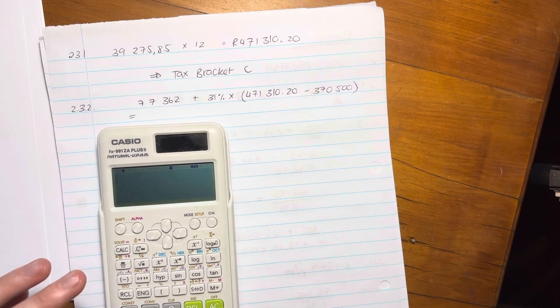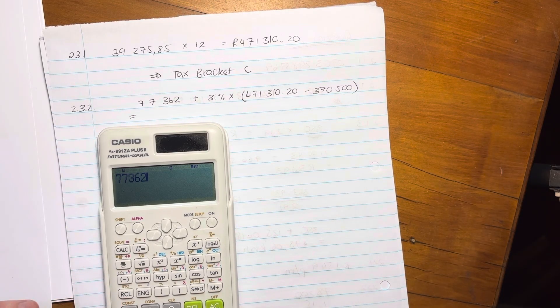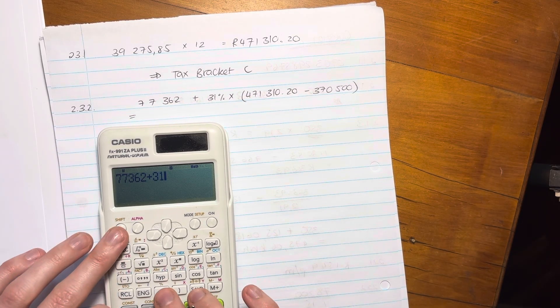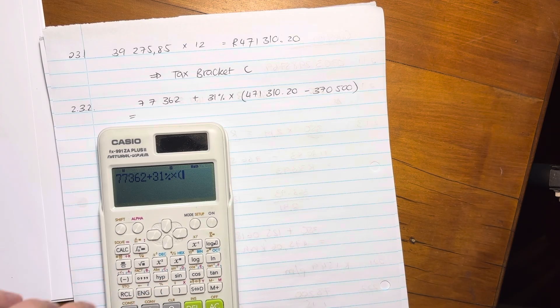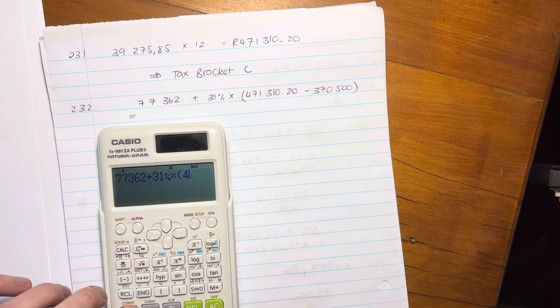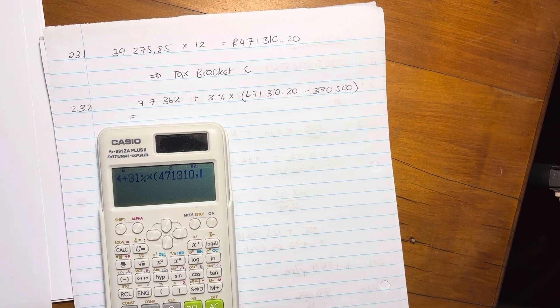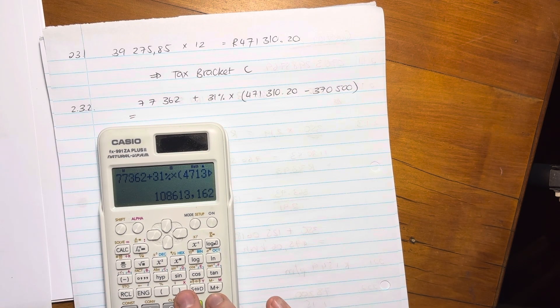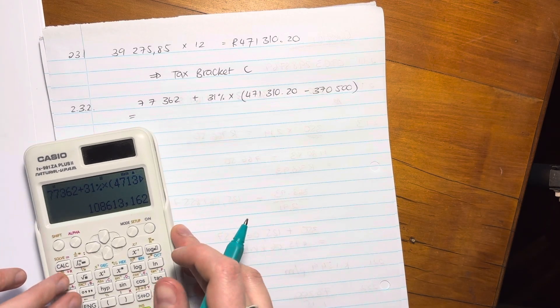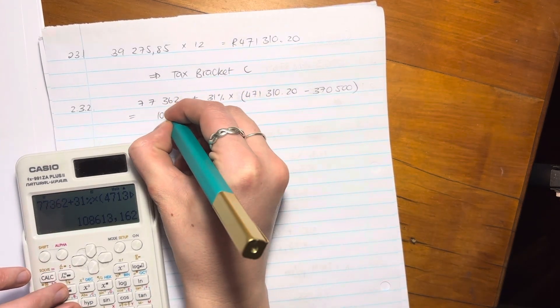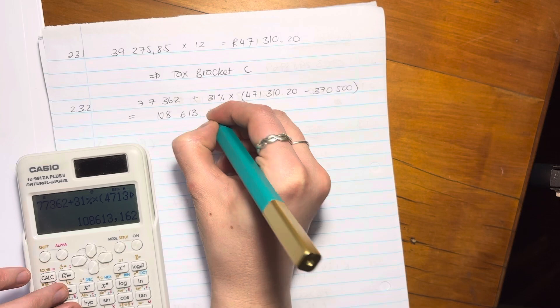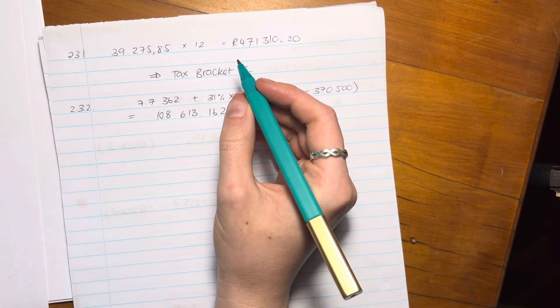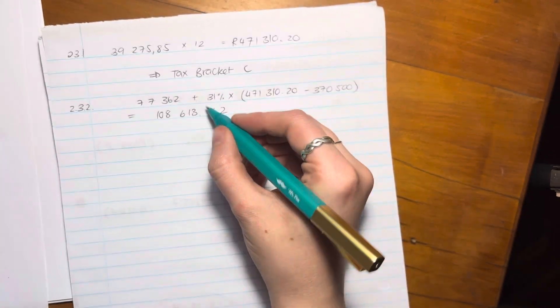So just pop this into your calculator. So I'm going to take 77,362 plus 31% times 471,310.20 subtract the 370,500. Actually close that little bracket there. And my answer is 108,613.162. So I'm not going to round it off right now. That's how much she has to pay.